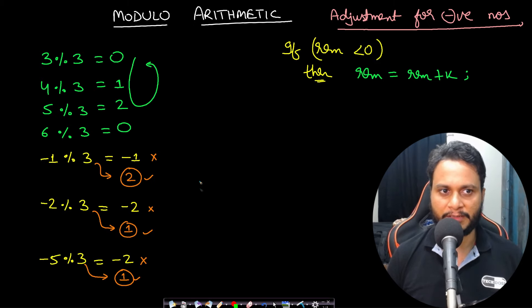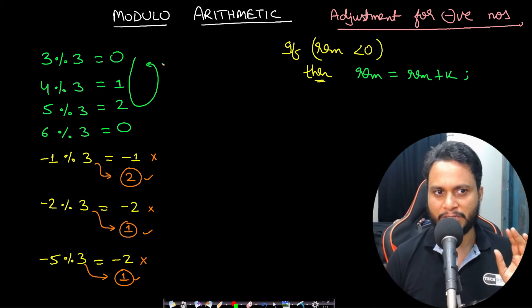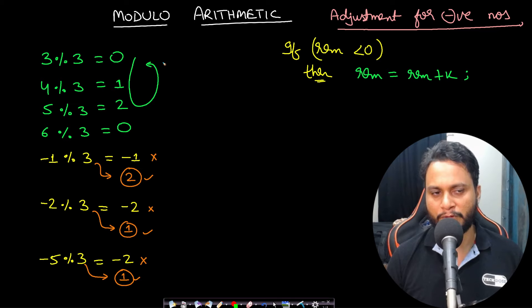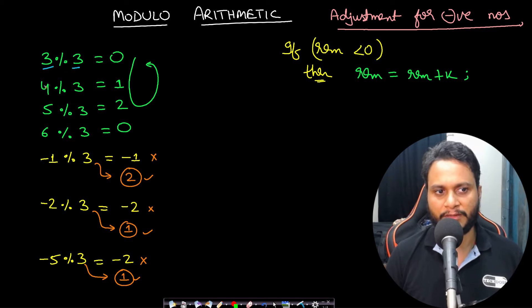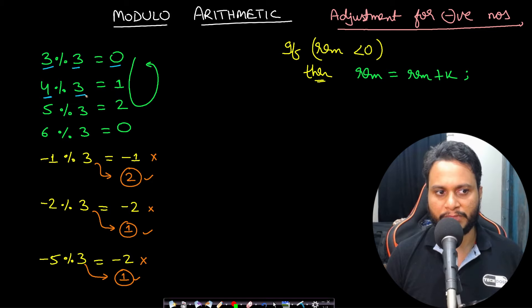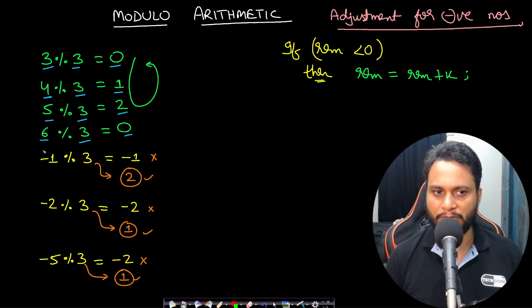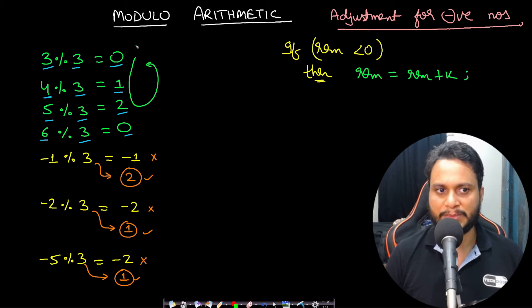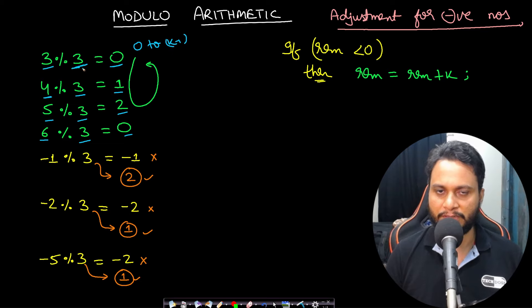Before the solution, let's look at some basics of modulo arithmetic. 3 mod 3 equals 0, since 3 is divisible by 3 with remainder 0. 4 mod 3 gives remainder 1, 5 mod 3 gives remainder 2, and 6 mod 3 gives remainder 0. The remainder keeps cycling, and the remainder produced will always be in the range 0 to k−1, where k is the divisor.